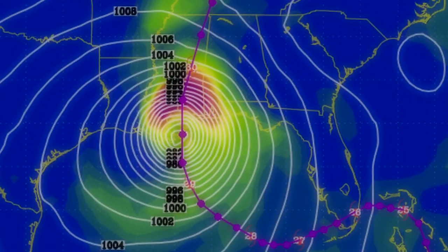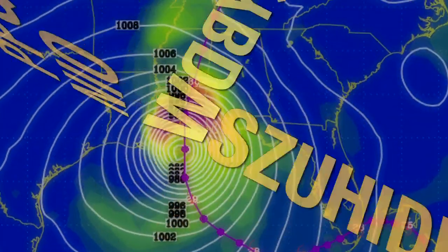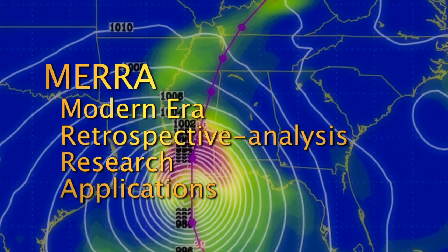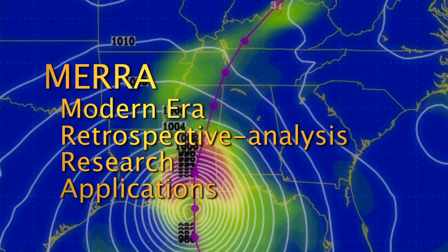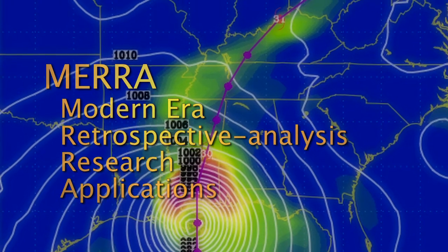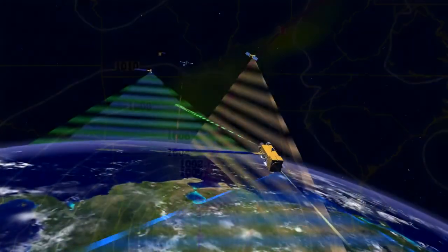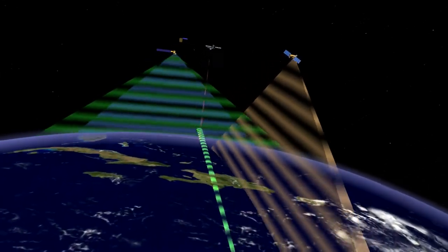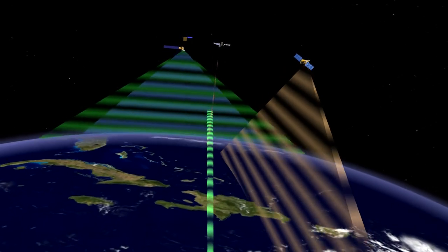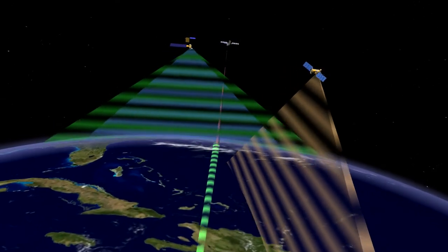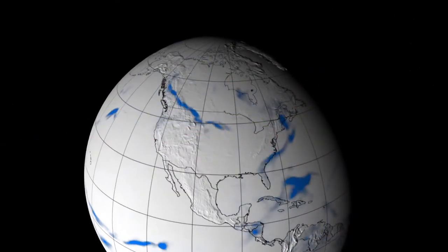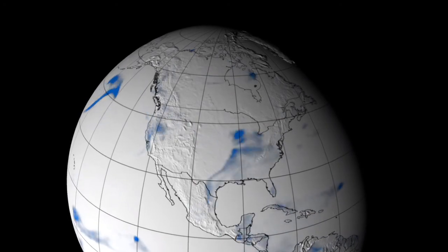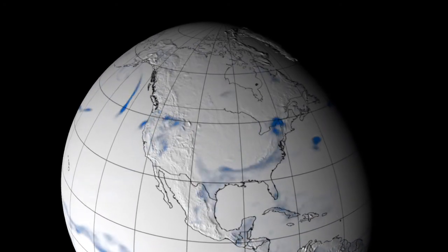One example of this technique is MERRA, the Modern Era Retrospective Analysis for Research and Application. MERRA incorporates data from the entire satellite record — over 30 years of data. Its results are a data encyclopedia that can be used for research and analysis.